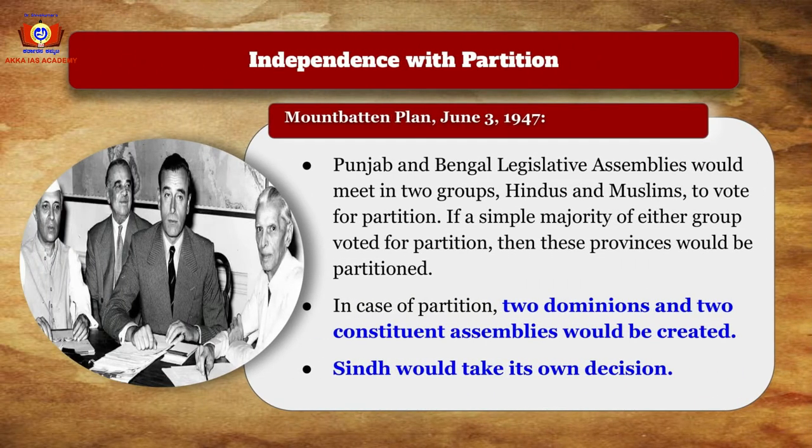In 1947, Mountbatten replaced Viceroy Wavell and proved to be firmer and quicker in taking decisions than his predecessors, as he was informally given more power to decide things on the spot. He also had the advantage of the British government's firm decision to quit at the earliest. His task was to explore the options of unity or division until October 1947, and then advise the British government on the form of transfer of power.